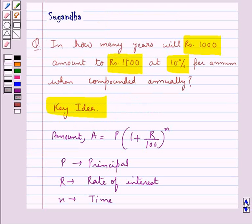Since we are required to find the number of years in which rupees 1000 will amount to rupees 1100 at 10% per annum compounded annually, let the required time be N years.